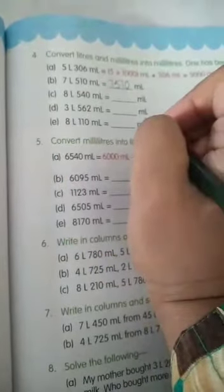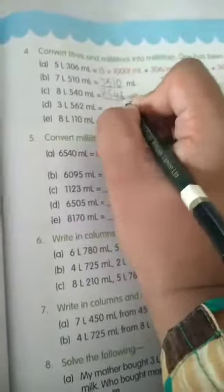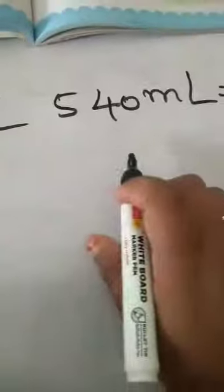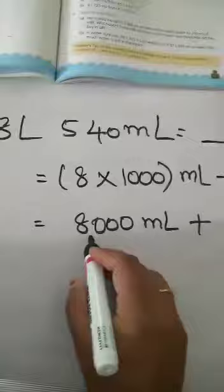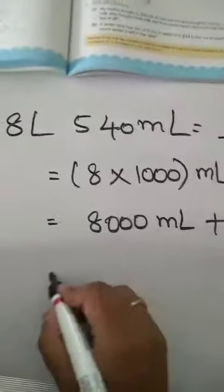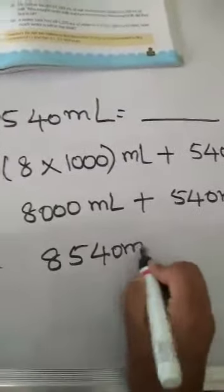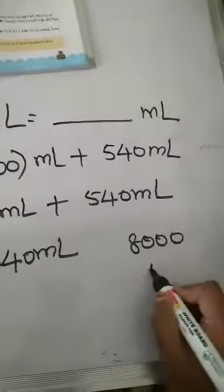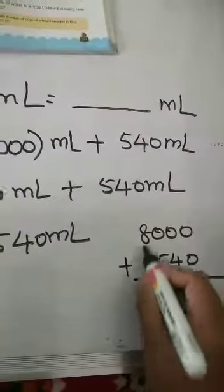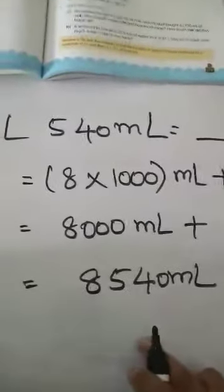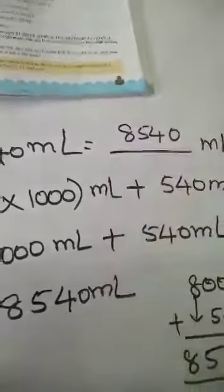8 liters 540 milliliters equals to dash milliliters. So 8 into 1000 milliliters plus 540 milliliters: 8000 plus 540. Adding: 0 plus 0 is 0, 0 plus 4 is 4, 0 plus 5 is 5, and 8 stays as it is. So 8540 milliliters. The answer in the dash is 8540 milliliters.